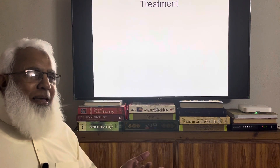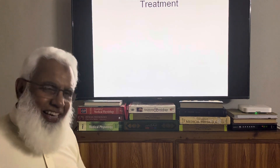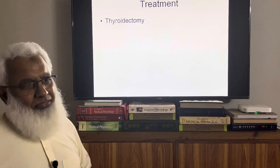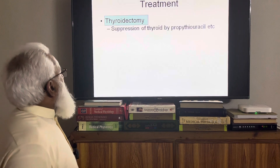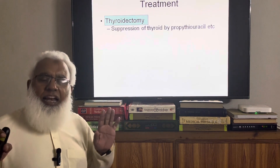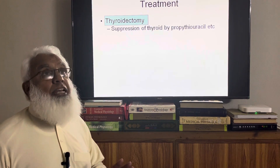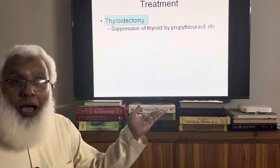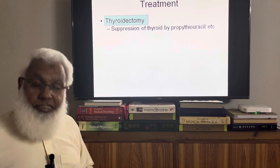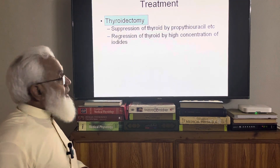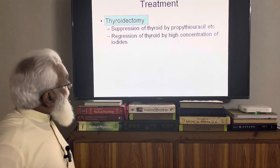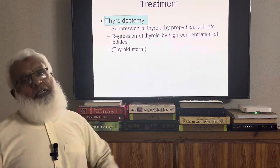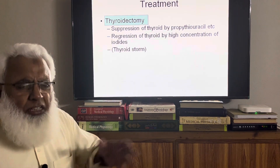For treatment: we cannot stop the immunity by removing all lymphoid organs — that is not possible. We can perform thyroidectomy — remove the thyroid gland. But before surgery, the gland must be made euthyroid (normal thyroid activity) using anti-thyroid drugs such as propylthiouracil or thionamides, or high concentration iodide. If we operate without suppressing it first, all the stored thyroxine is released into the blood, causing a thyroid storm.